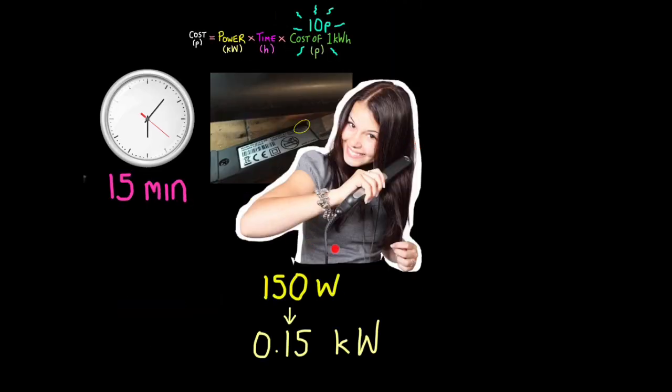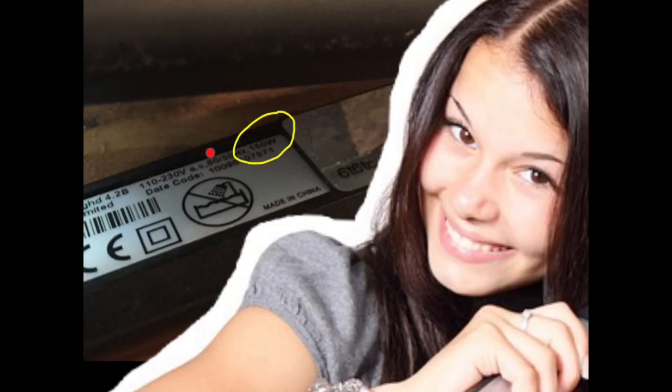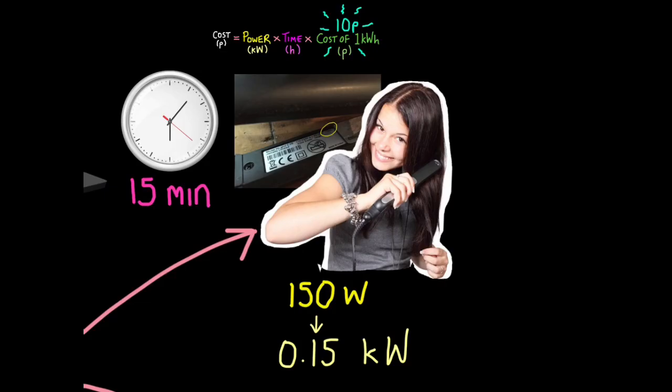So now let's look at some hair straighteners. Here you can see the power rating is 150 watts. Now I'm not an expert on the matter, let's say that one session of using a hair straightener takes about 15 minutes. So once again turn the watt value into kilowatts by dividing by 1000. So we have 0.15 kilowatts. Remember because we're moving that decimal point back 3 spaces. So 0.15 kilowatts. So here we do 0.15 for kilowatts, and we do 0.25 hours for time.